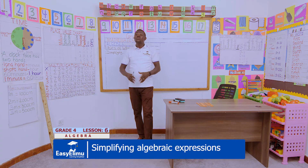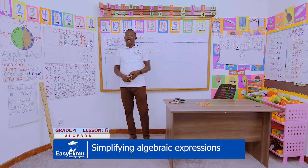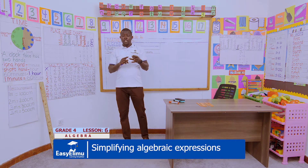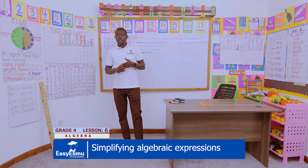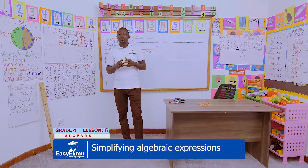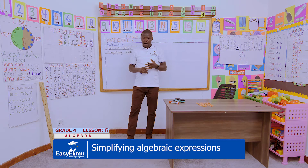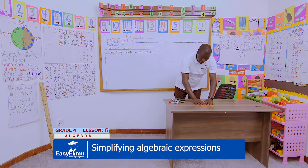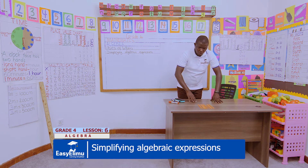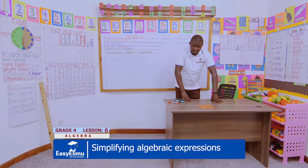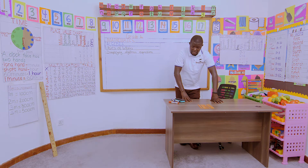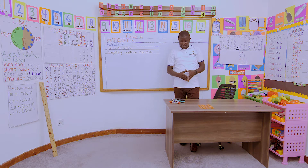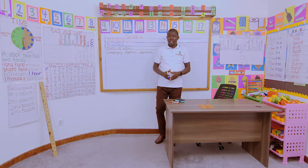In our previous lesson, we learned how to form algebraic expressions involving multiplication, division, subtraction, and addition. Today, I would like us to pair up and identify the counters that we have here on the board and on our table. The question for today: I would like us to solve this in our groups — four learners will add these counters.